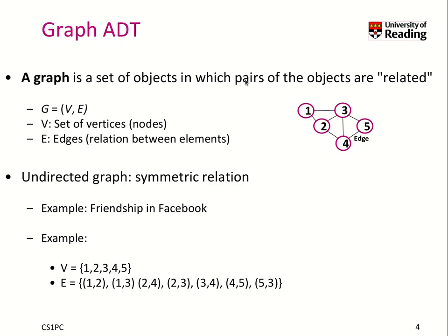A graph is a set of objects in which pairs of them are related. We typically represent it as a set of vertices. In this example, we have vertices 1, 2, 3, 4, and 5, and a set of edges which represent the relation between the elements.